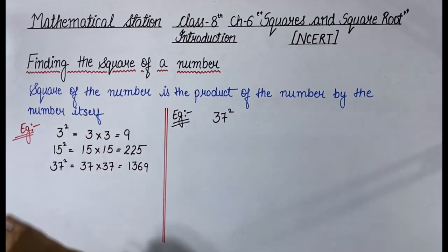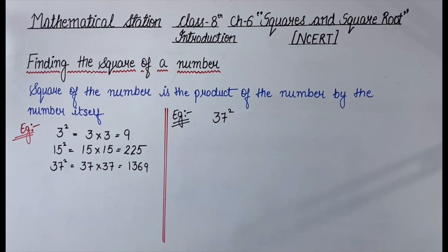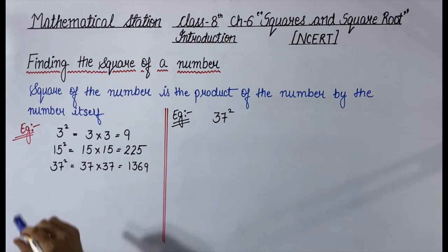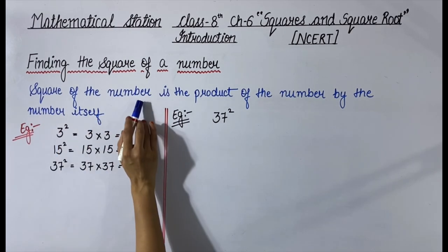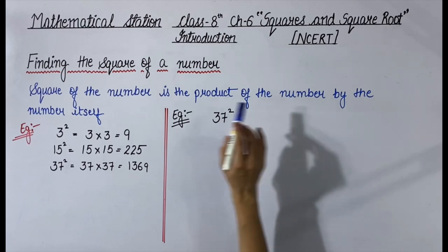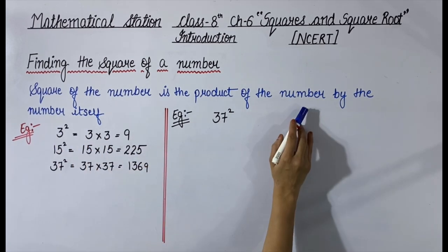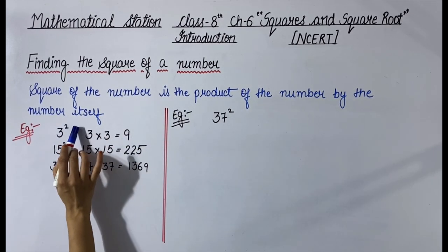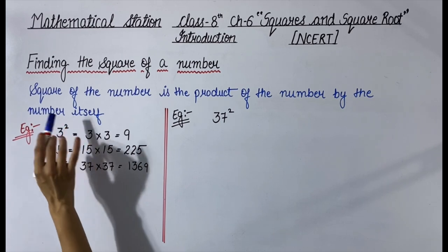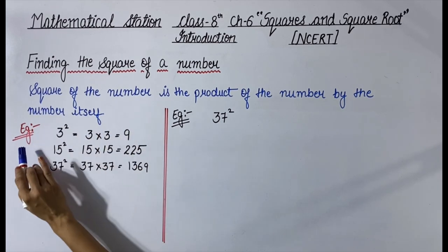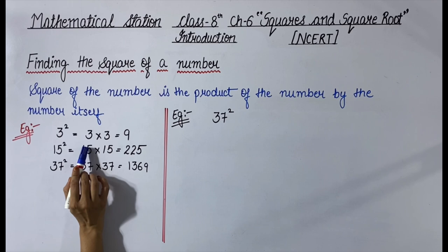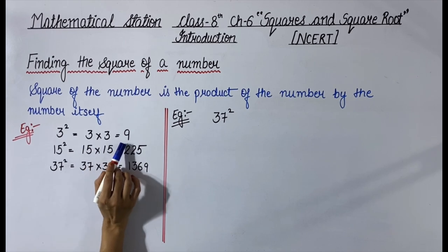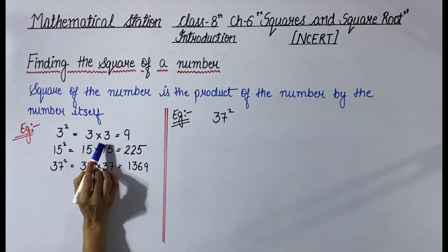We will learn to find the square of a number. The square of a number is the product of the number by itself. For example, 3 squared is equal to 3 multiplied by 3, which is equal to 9.